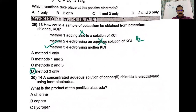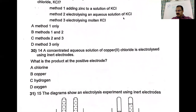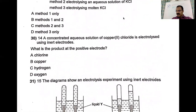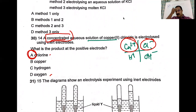This is a difficult question since three statements are given with four options to choose from. For those questions, put a tick or cross on each statement — it will help. For concentrated aqueous copper chloride using inert electrodes: ions are Cu²⁺, Cl⁻, H⁺, OH⁻. The cation choice is copper (less reactive than zinc). Since it is concentrated, the anion is Cl⁻, giving chlorine at the positive electrode. Concentrated chloride means chlorine undergoes oxidation at the anode.